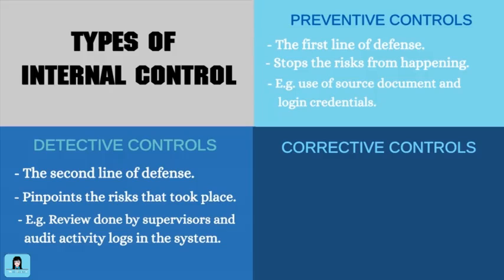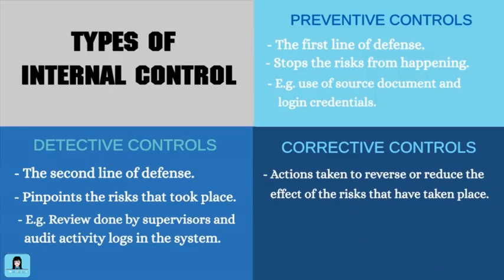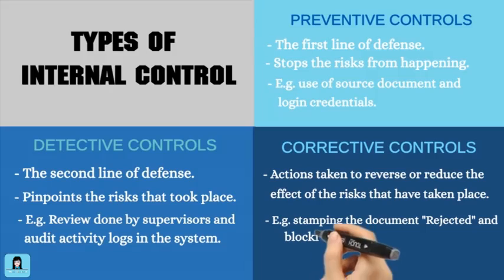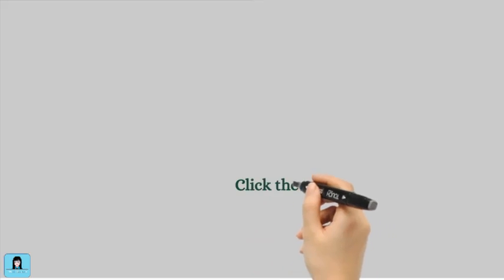Corrective controls are actions taken to reverse the effects of errors detected by the detective controls. Examples of corrective controls are stamping the document rejected or disapproved after the supervisor's review, and blocking the logging credentials of a user after several failed attempts in logging into the system. Now you understand internal controls.